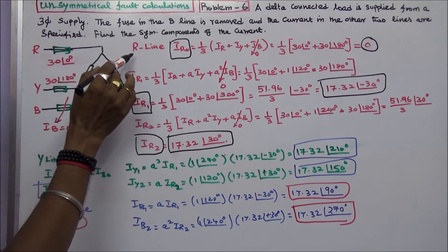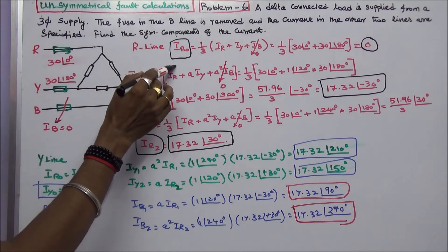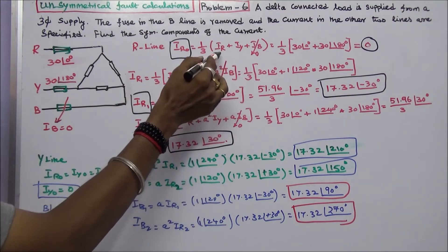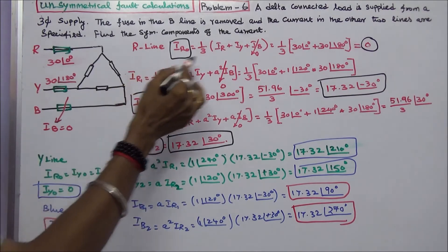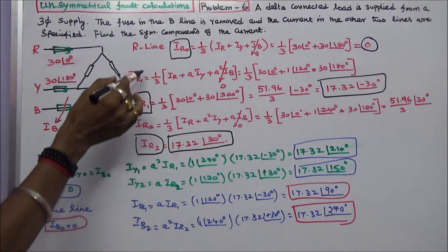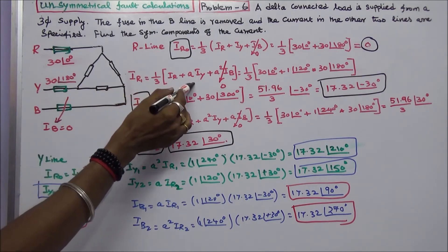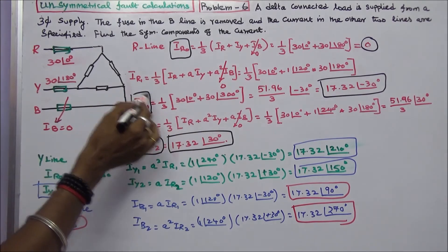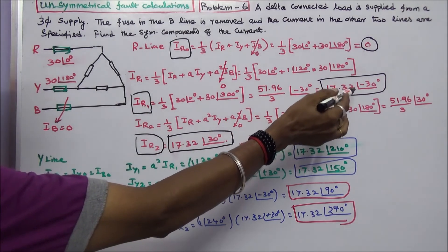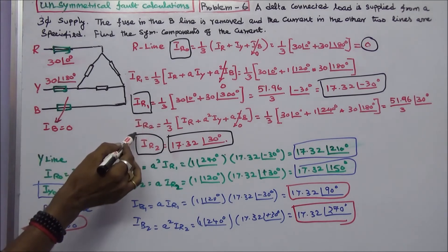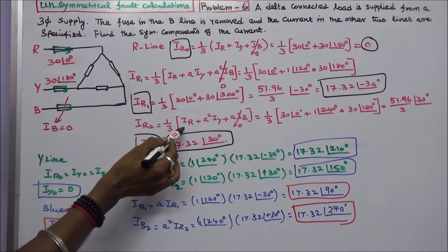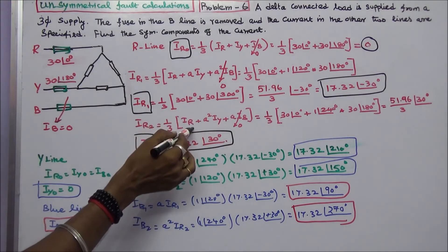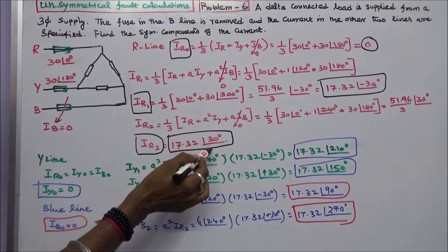First, we consider the R line. IR0, the zero sequence component, equals 1/3 into IR plus IY plus IB. Here IB is equal to 0. Substituting IR and IY, IR0 equals 0. The positive sequence current IR1 equals 1/3 into IR plus A·IY plus A²·IB; this last term is 0. Substituting all values, IR1 equals 17.32 angle minus 30 degrees. The negative sequence current IR2 equals 1/3 into IR plus A²·IY plus A·IB; this term is 0. Substituting all values, IR2 equals 17.32 angle 30 degrees.